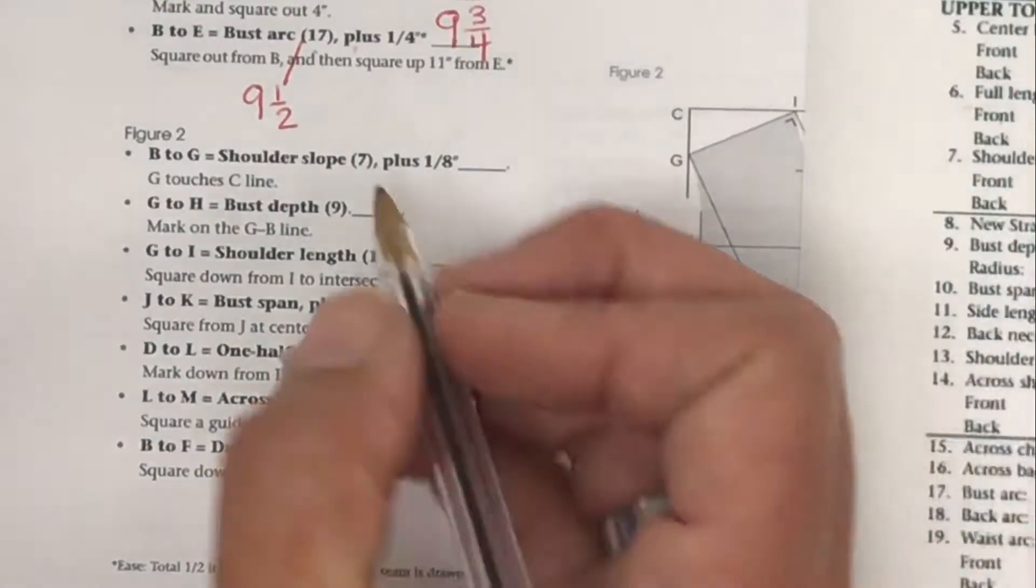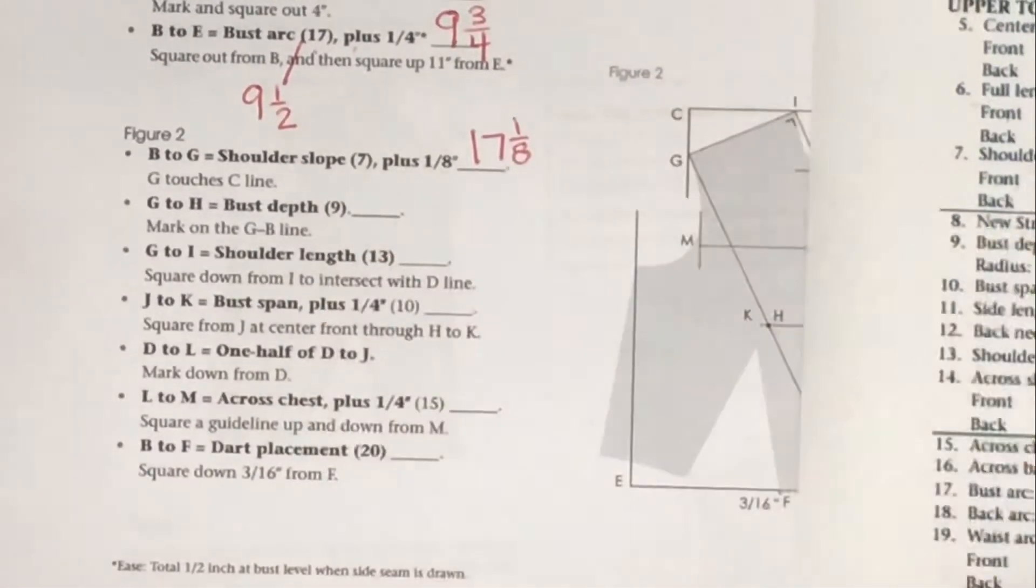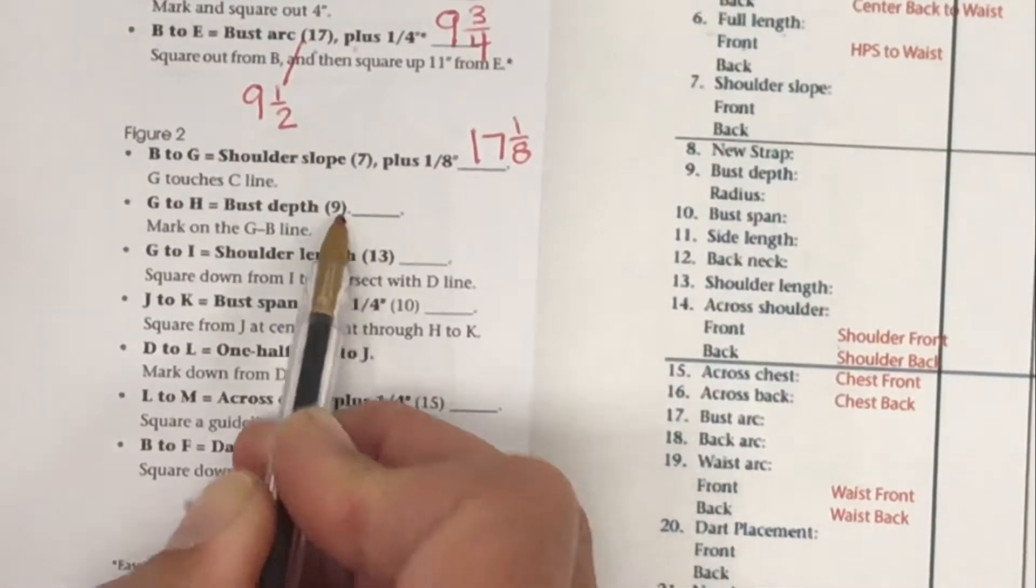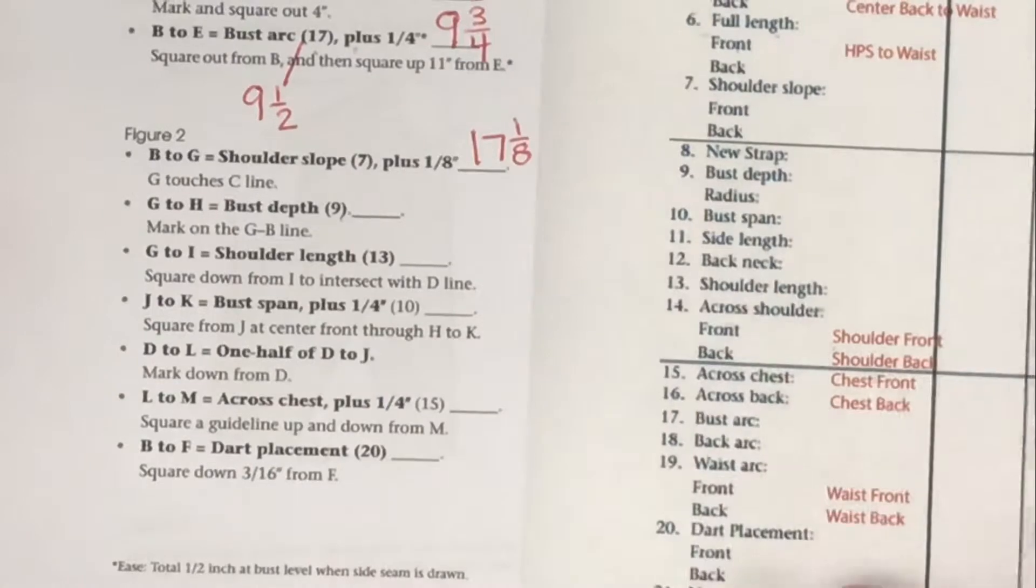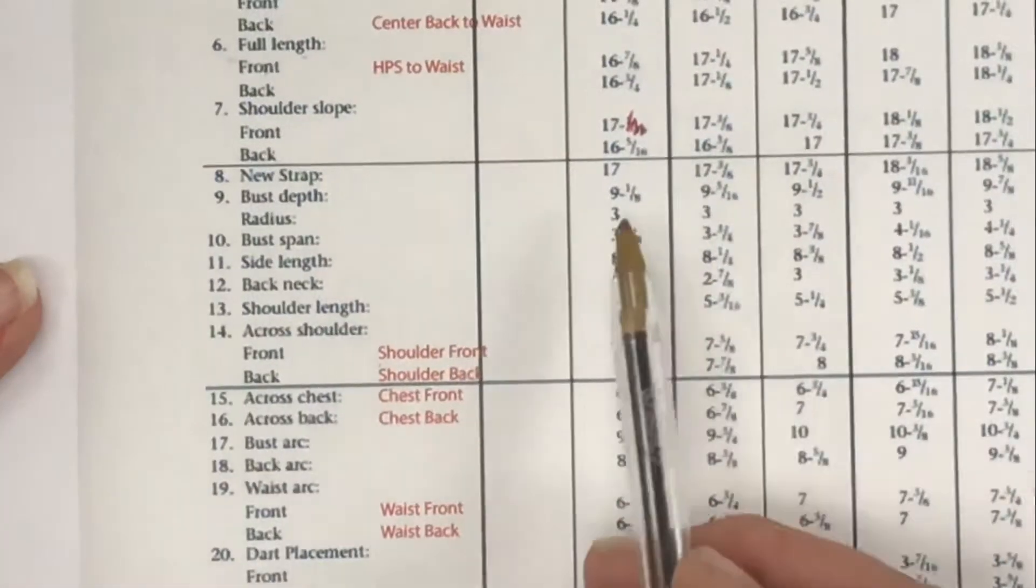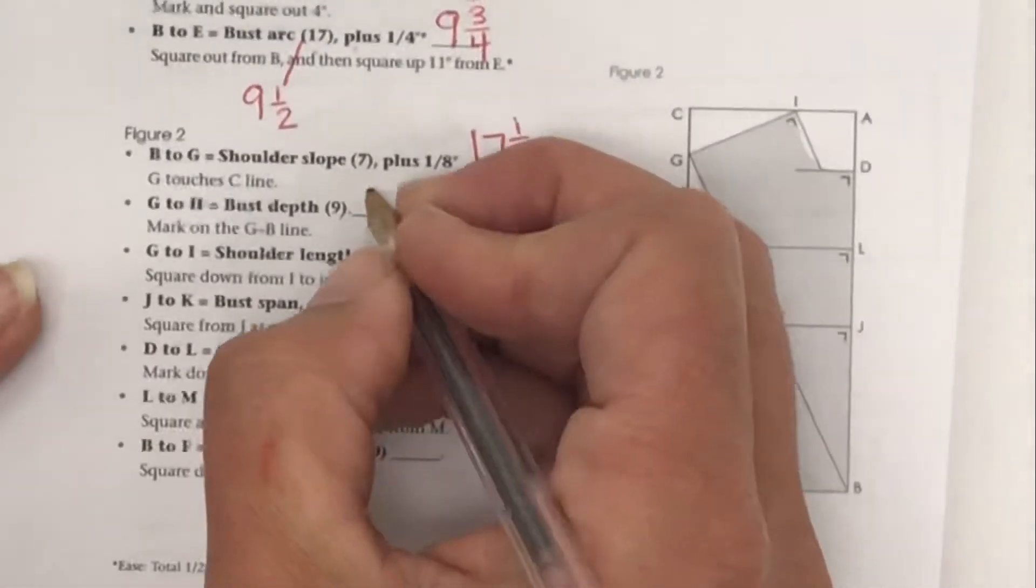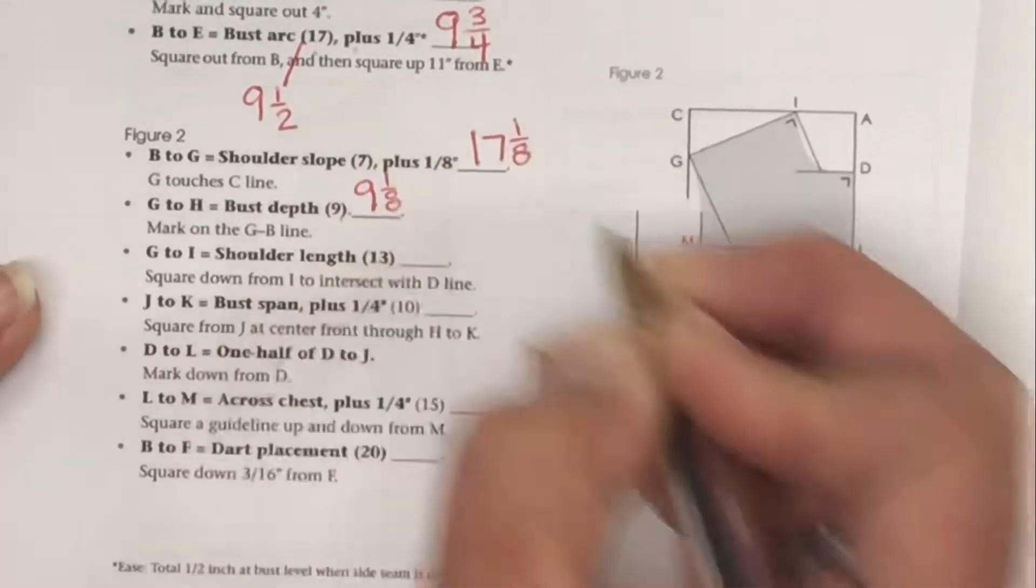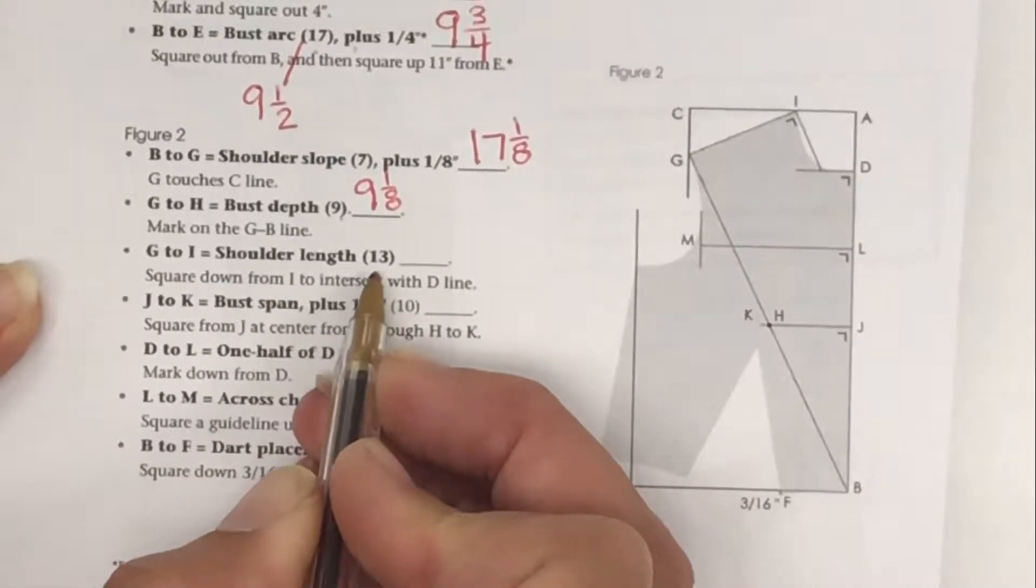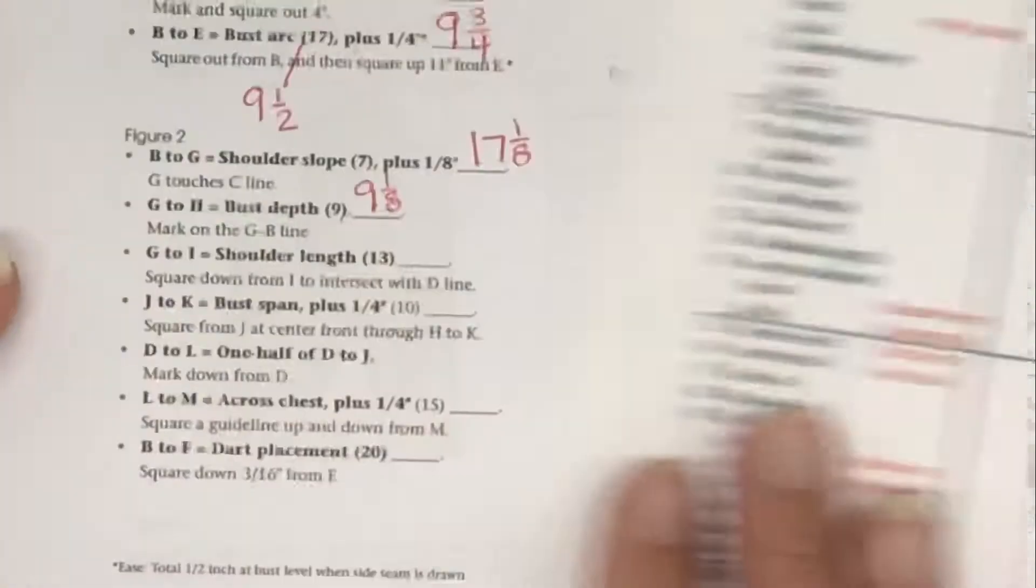Bust depth, number 9. Our bust depth is number 9: 9 and 1/8. No math needed, so 9 and 1/8. Great. Our shoulder length is number 13, no math, that's awesome. Shoulder length: 5 and 1/8.